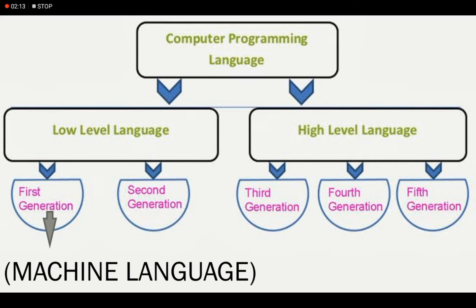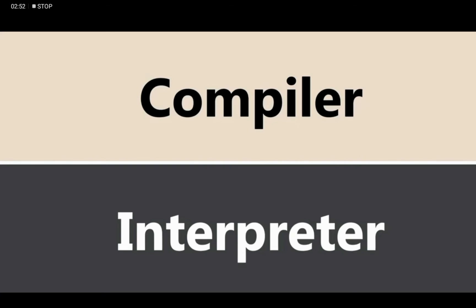So today we will discuss compiler and interpreter. As we know, we have to convert all languages — 2nd, 3rd, 4th, and 5th generation — into machine language, because the computer only understands machine language. To convert high level languages into machine language, we need a translator. We have two types of translators: the first is compiler and the second is interpreter.